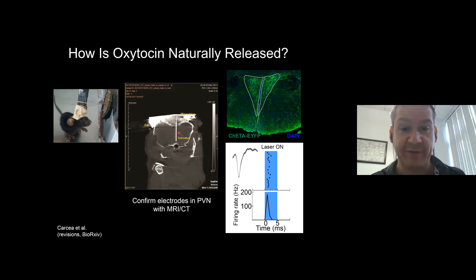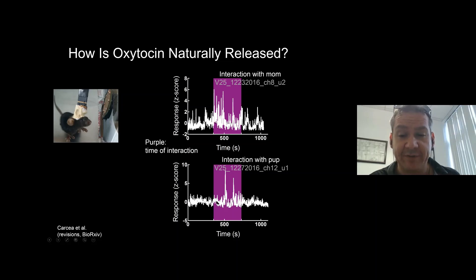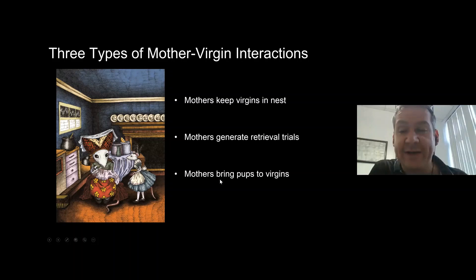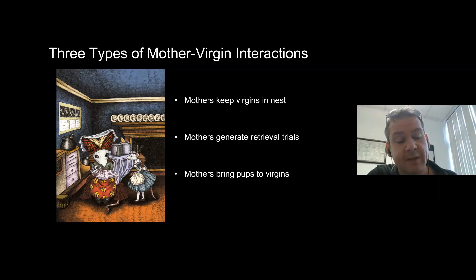To our surprise, it really wasn't interactions with pups that was activating oxytocin neurons — it was interactions with the mother. We identified three different interactions in the video that seem to lead to activity in virgin oxytocin neurons. This is all hand scored, but going forward we're taking advantage of modern machine learning approaches to automate analysis of thousands and tens of thousands of hours of continuous video. One behavior we're calling 'shepherding' seems to activate oxytocin neurons: the mother chases the virgin into the nest.